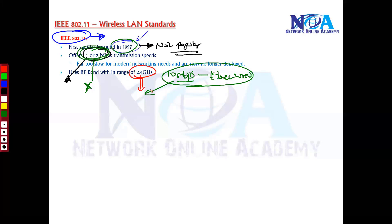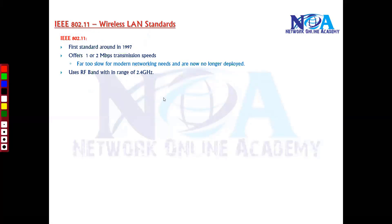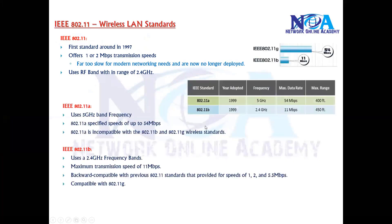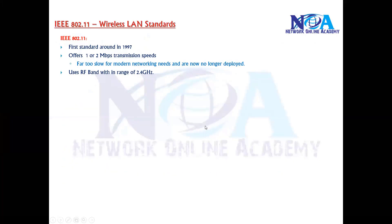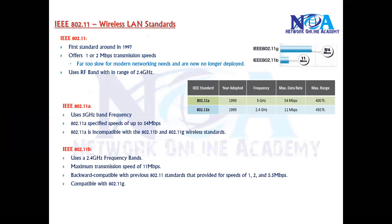It was operating in the frequency band of 2.4 GHz. This was one of the first standards, but generally you won't find 802.11 in most standard lists because it was not widely adopted by users. So technically when you see a standards list, you will find it starting from 802.11a and 802.11b.